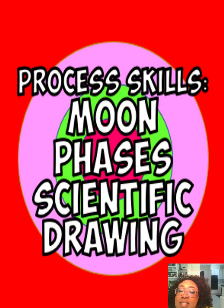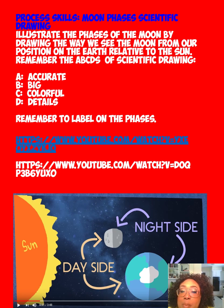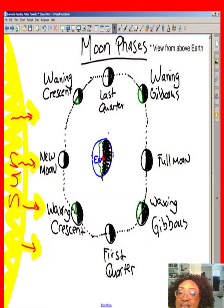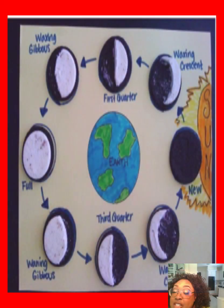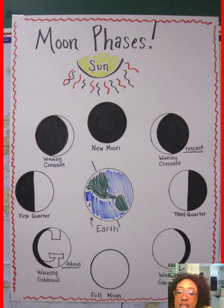Moon phases — scientific drawings for my artists out there. Link to see about and understand the different phases of the moon and why we see different phases of the moon. Remember in your scientific drawings your ABCDs: A, accurate; B, big; C, colorful; and D, have your details. You're a stallion who decided to make her drawing on the computer. Use Oreo cookies — remember your ABCDs and have fun.